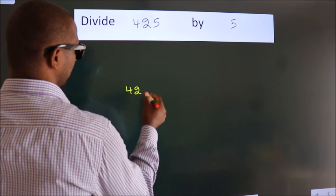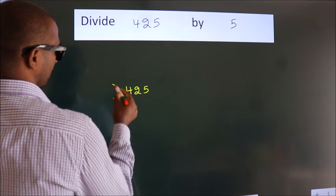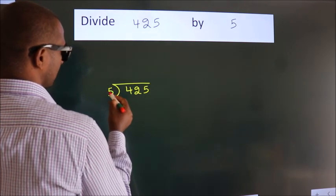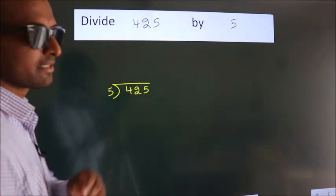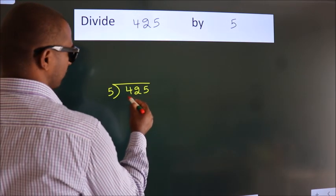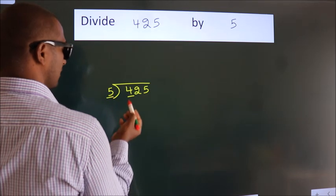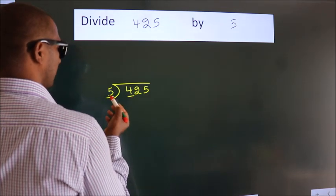425 here, 5 here. This is step 1. Next, here we have 4, here 5. 4 is smaller than 5.